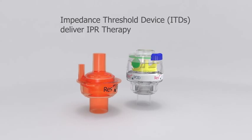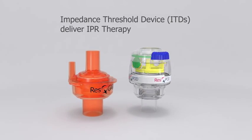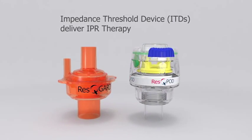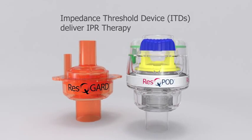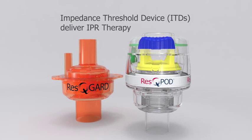There are two types of impedance threshold devices. The ResGard ITD provides perfusion on demand to improve vital organ blood flow in various types of shock, while the ResPOD ITD is used to enhance blood flow during CPR.